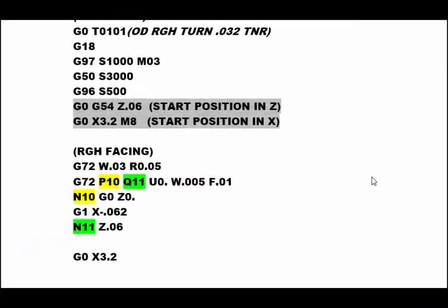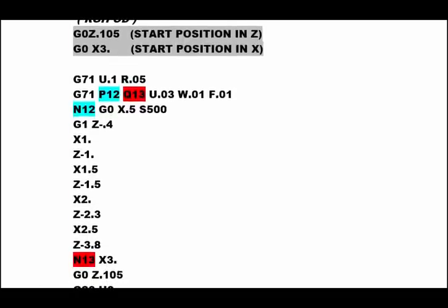In lesson one we learned about the G72 rough facing canned cycle and that we need to position the tool in the correct X and Z position before going into it. In lesson two we learned about the G71 rough OD canned cycle, where again we need to start the tool in the correct position. We also have the P and Q values which refer to the N numbers inside the geometry portion of that canned cycle.